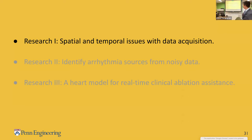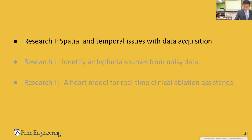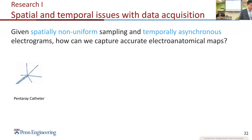Research is organized into three groups. Group one addresses spatial and temporal issues with data acquisition. Group two covers identifying arrhythmia sources from noisy data. Group three covers a heart model for real-time clinical ablation assistance. The problem in research group one is spatial and temporal issues — during data acquisition, the catheter is inserted into the left atrium and acquires data region by region as physicians manipulate it to different locations.